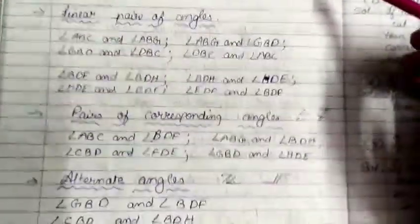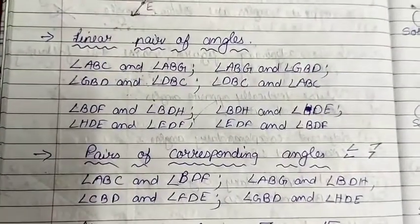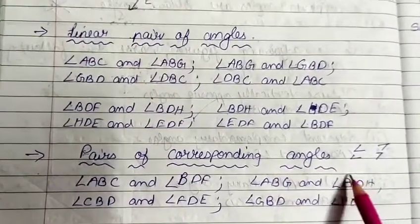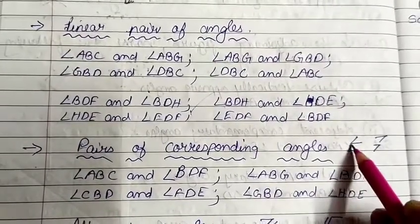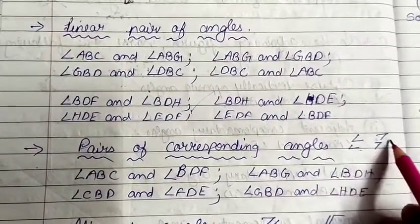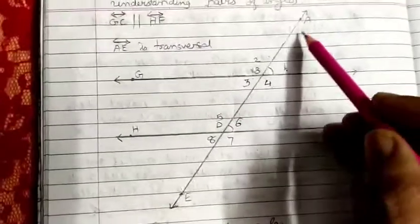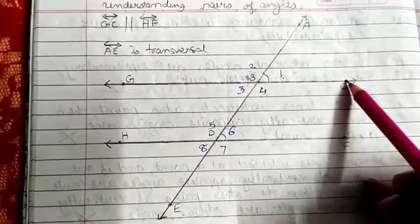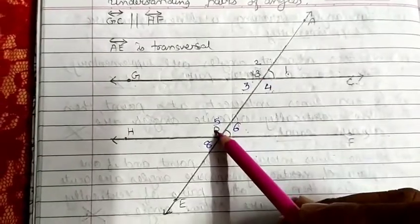Now let us see the next pair — corresponding angles. Corresponding angles form an F-like structure. The angles go in the same direction. For example, angle ABC and angle BDF form an F-like structure.